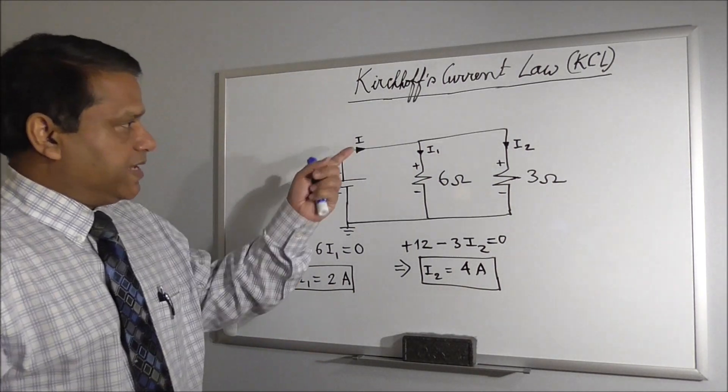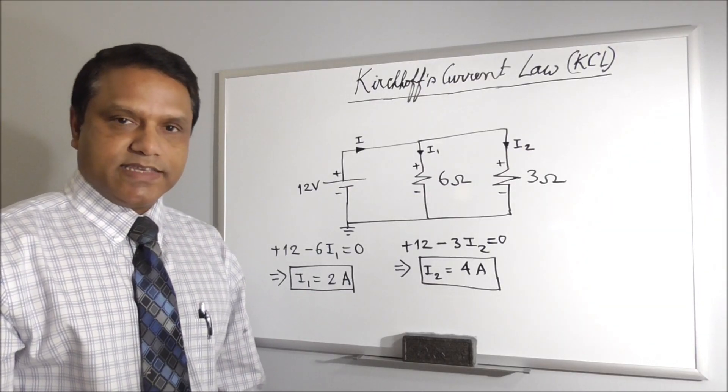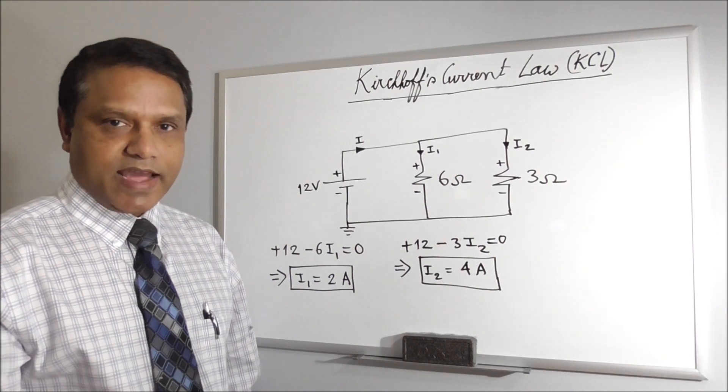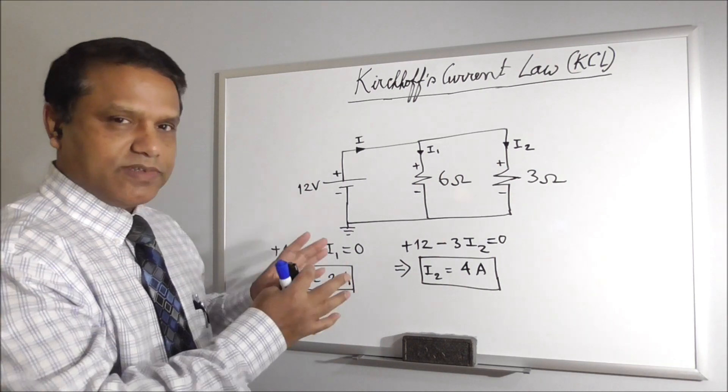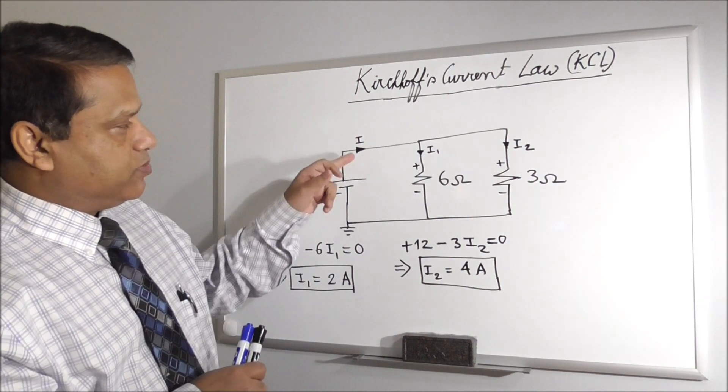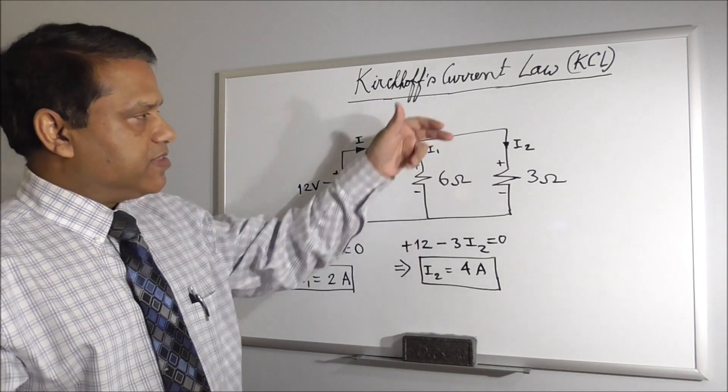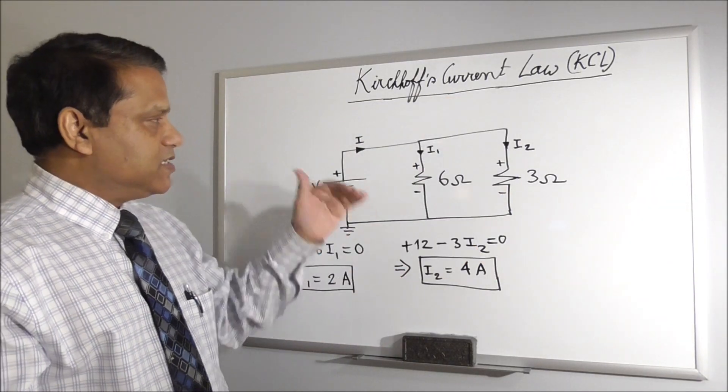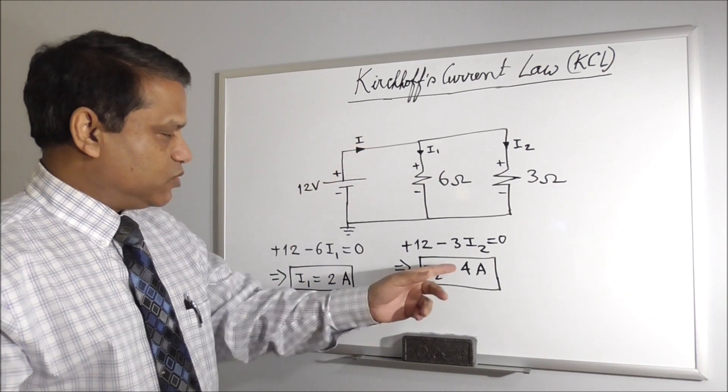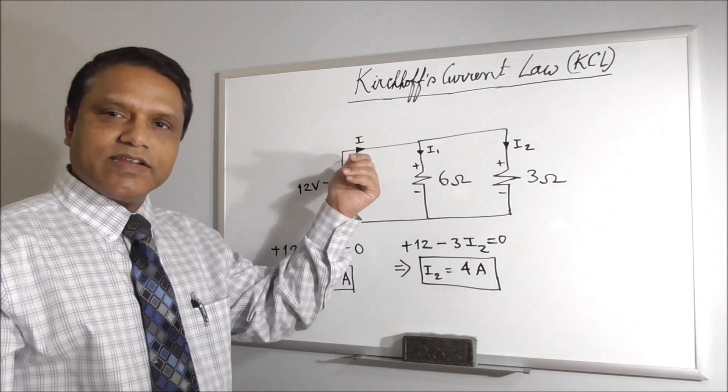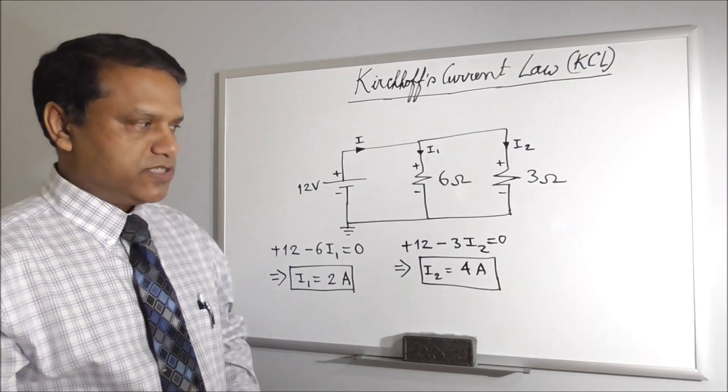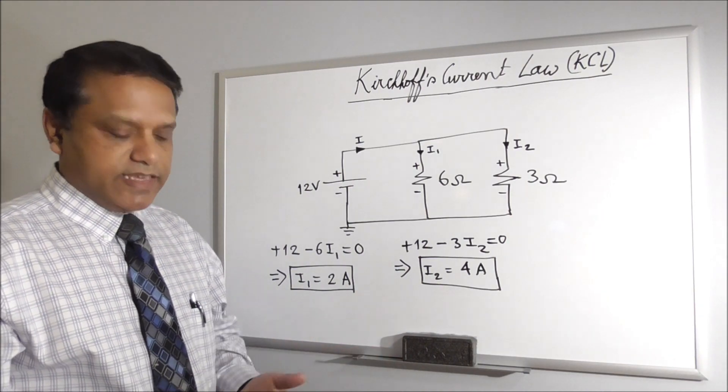Now, how do we find I? Actually, unless you use KCL, we cannot find I. But I think just from observation, you can tell the value of this current. This is 2 Ampere and this is 4 Ampere. So this current must be sum of these two currents, 2 plus 4, 6 Ampere. And that's what KCL is, simple common sense.